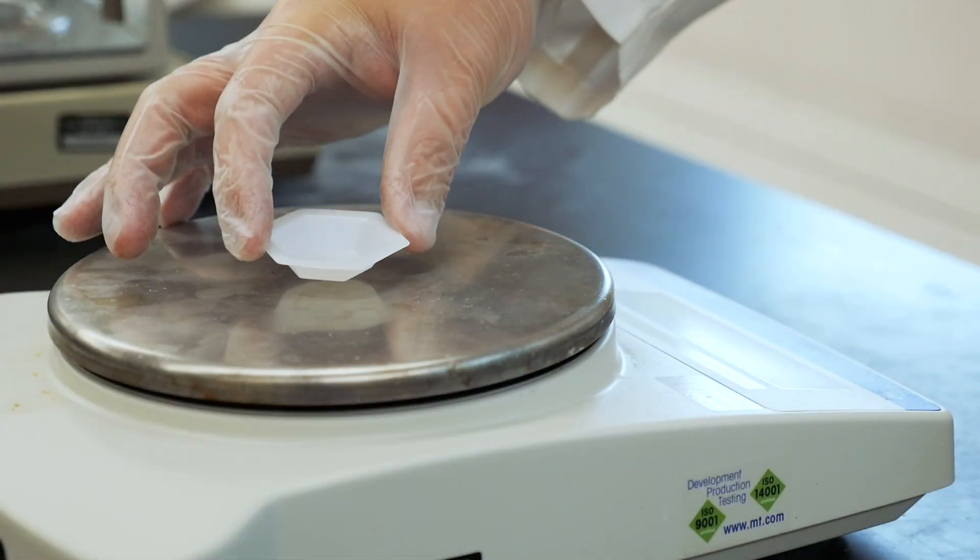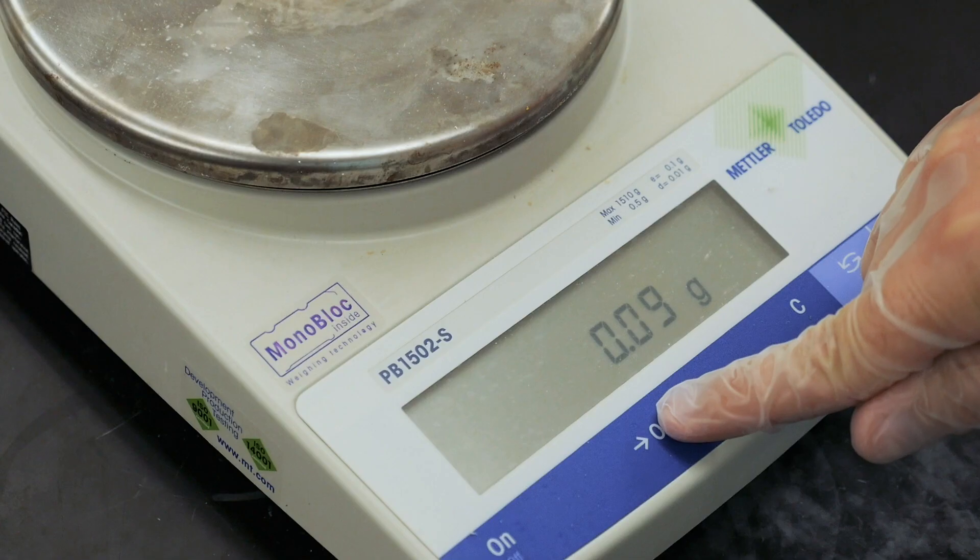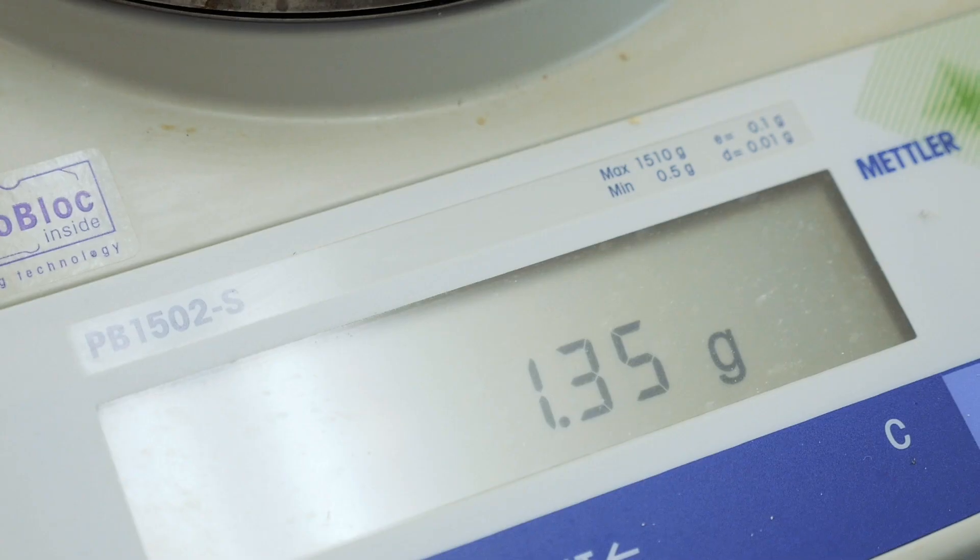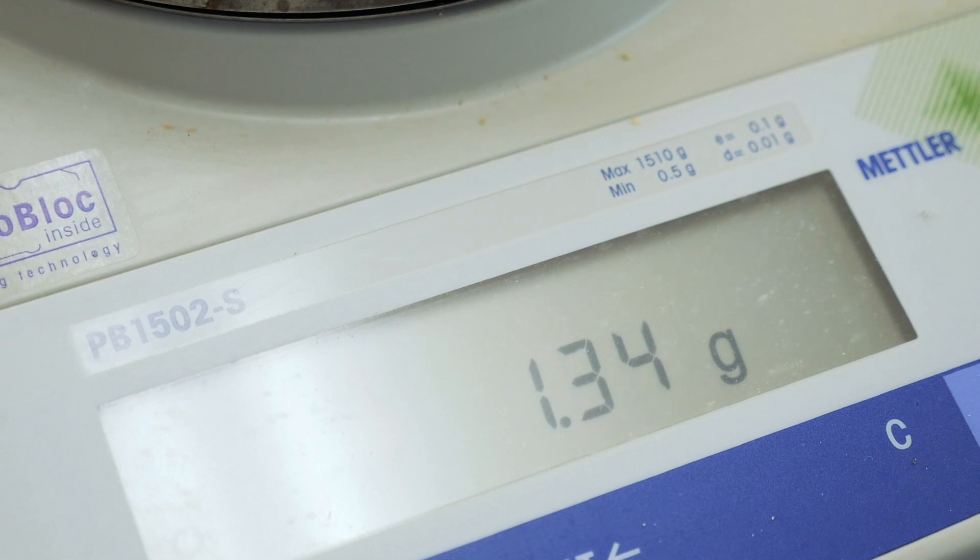So let's get to it. Place a clean plastic weighing dish on the pan of a top loading balance and tare it. The display will read zero grams. Add between 1.2 and 1.5 grams of dried KHP to measure the mass of KHP.